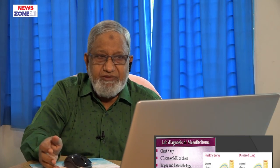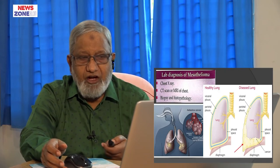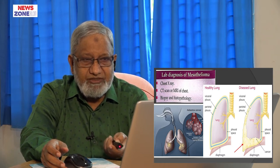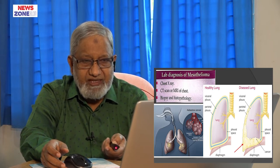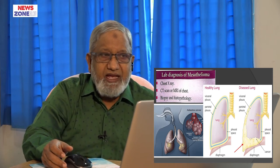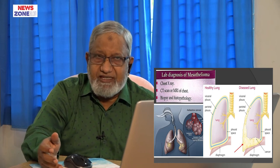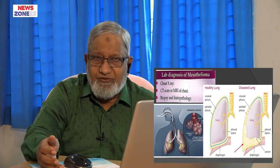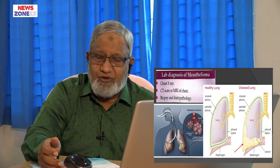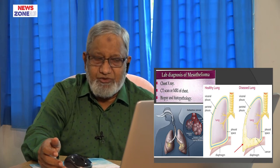The mixed pattern is about 20 percent. The picture of mesothelioma looks like a malignant tumour because the tumours have irregular margins and infiltrate into the lung tissues. If we want to establish the diagnosis, first we do an x-ray, then CT scan or MRI, followed by biopsy and histopathology.